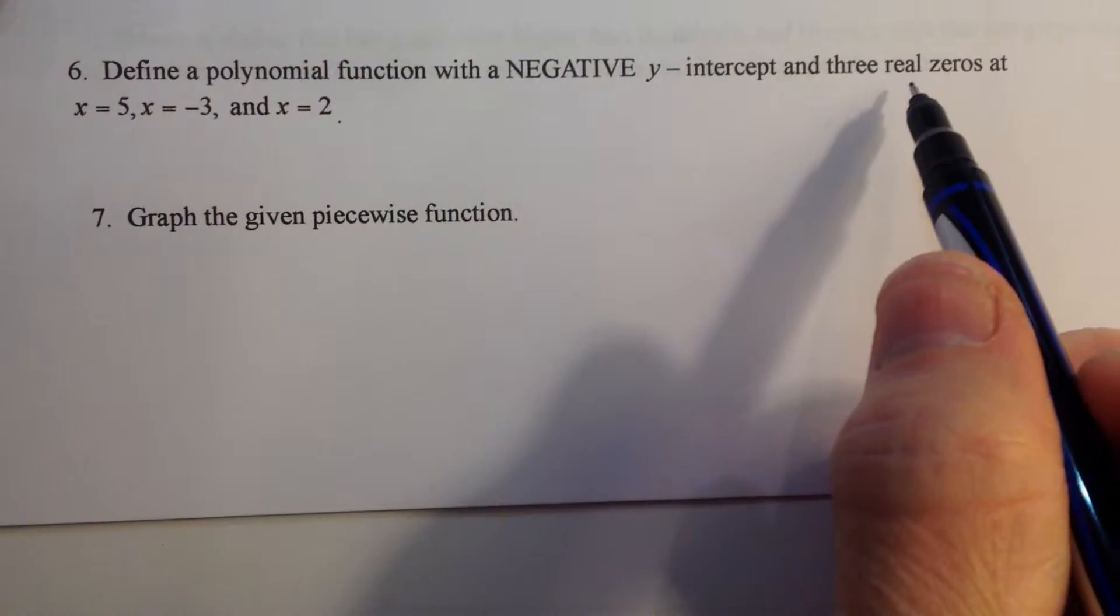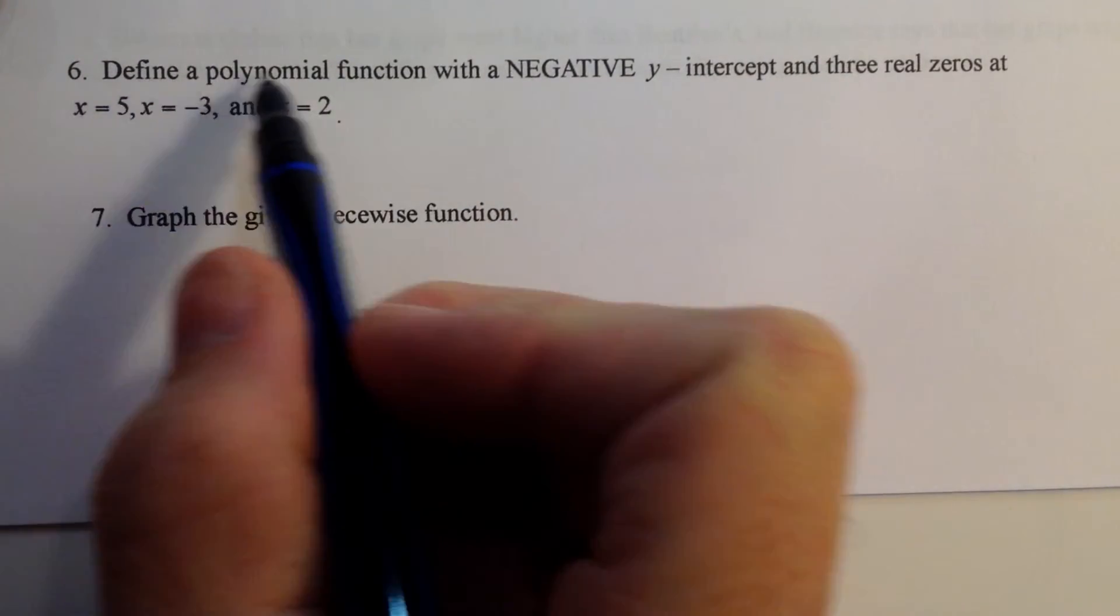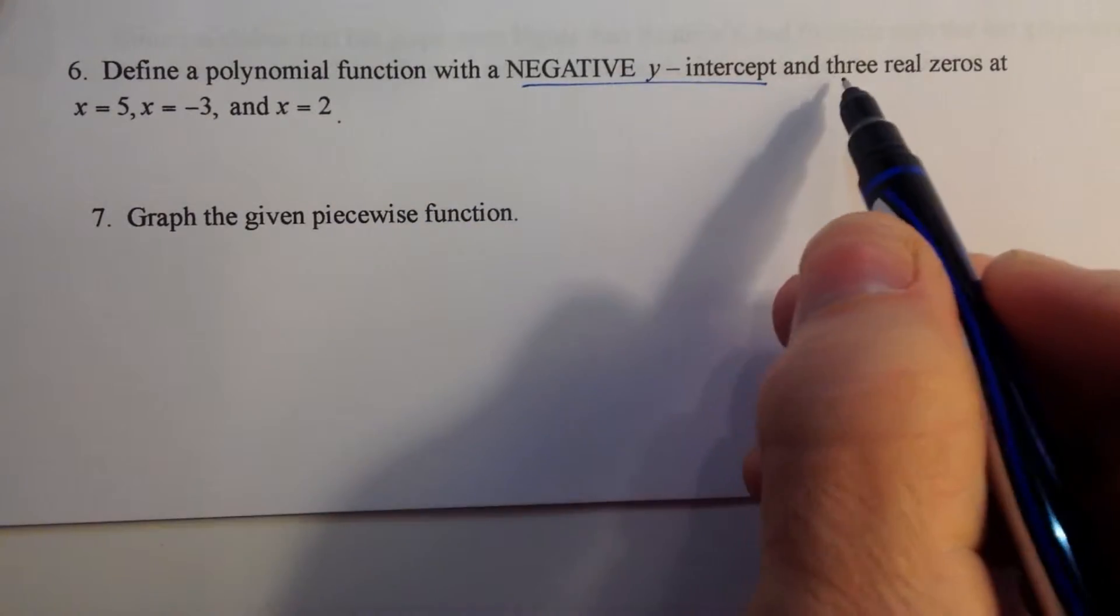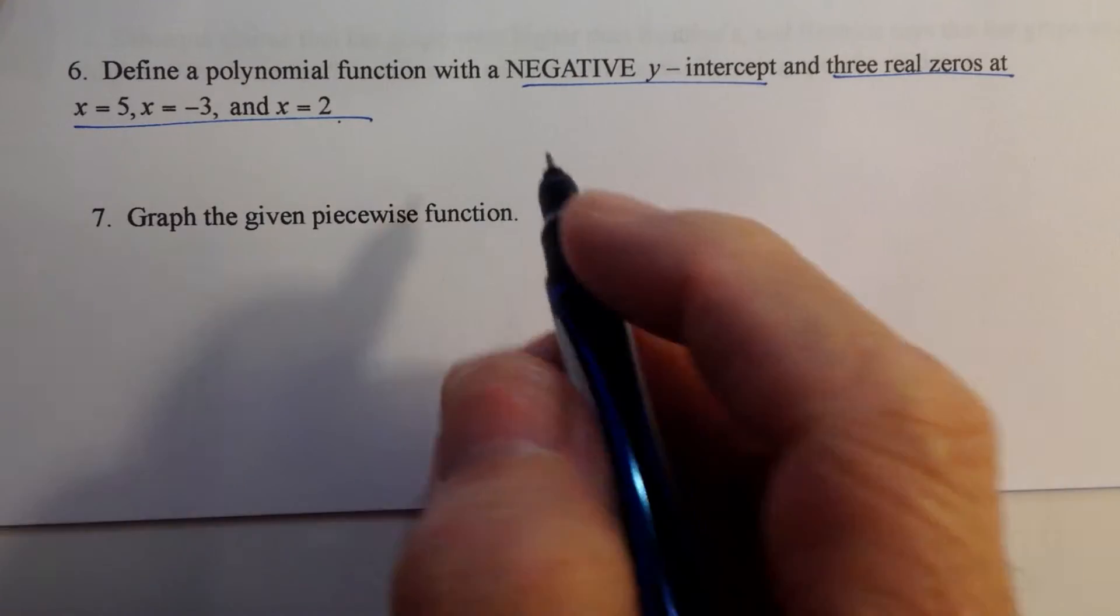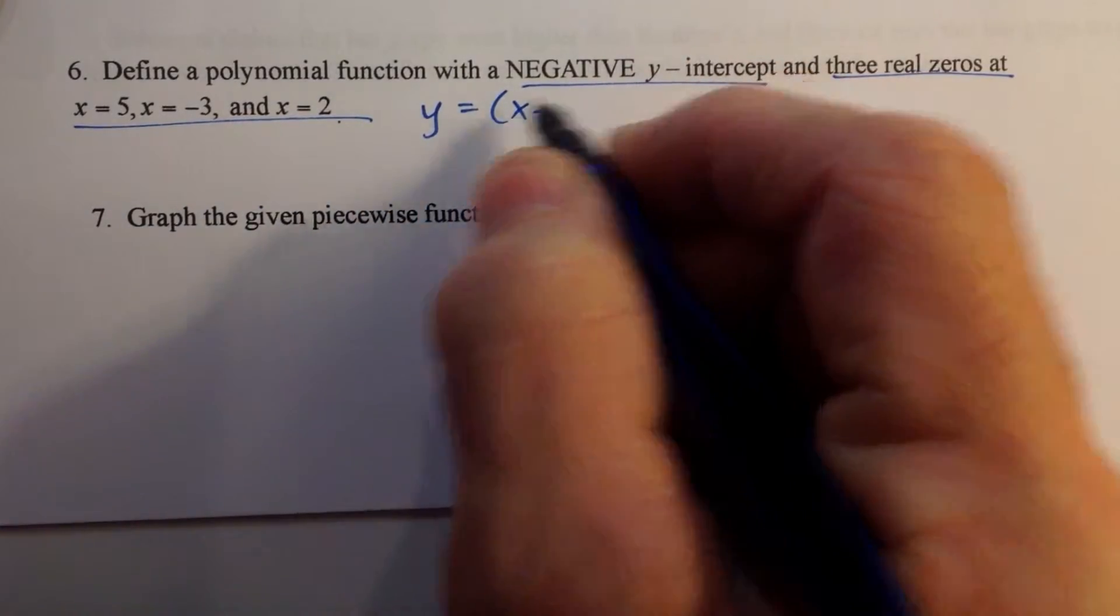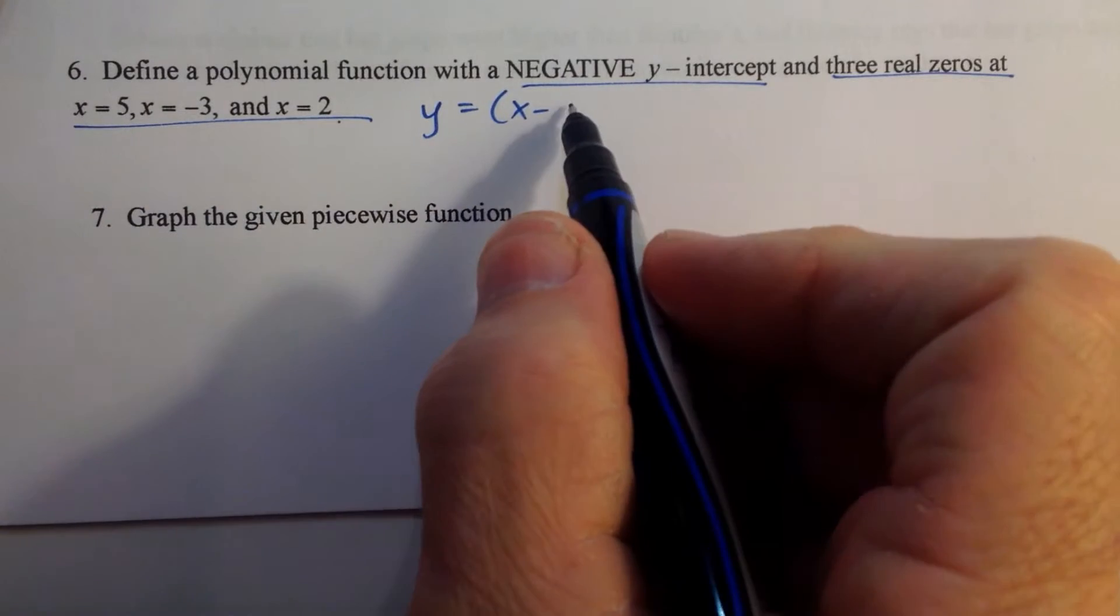For problem number six, we need to define a polynomial function with a negative y-intercept. We'll get to that in a minute, but three real zeros at these values mean that y equals x minus... If x minus 5, so I'll go back.